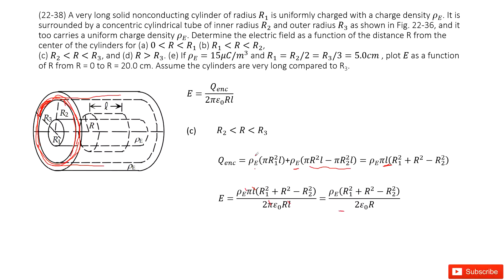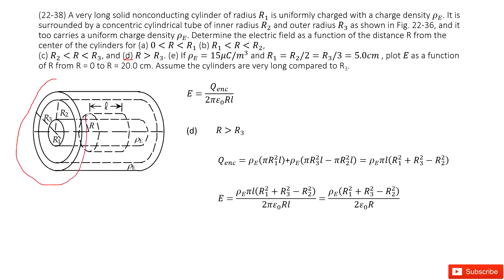The last part, part D, is where r is larger than R3. The Gaussian surface encloses both the cylindrical object and the full shell. The enclosed charge is the density times the volume of the cylinder plus the density times the volume of the shell. Inputting that, pi cancels and L cancels, giving us the final answer.